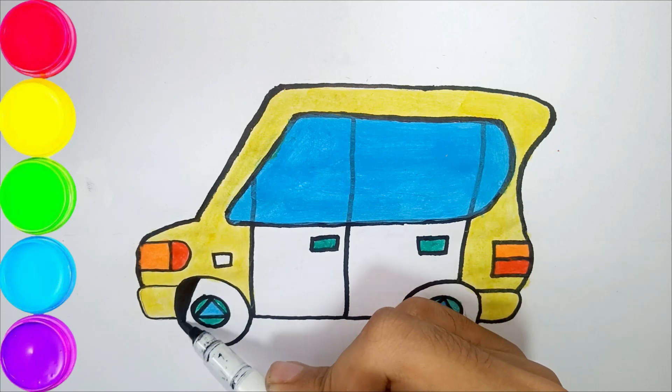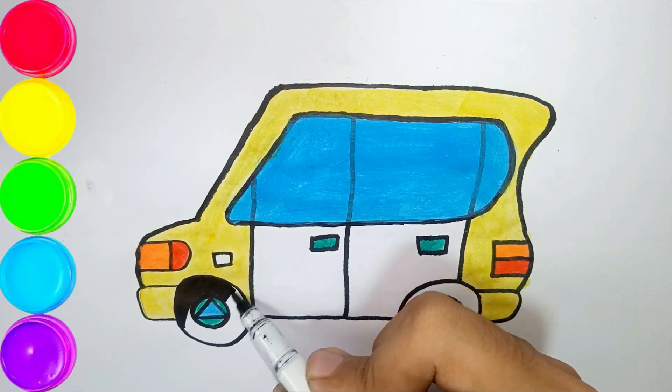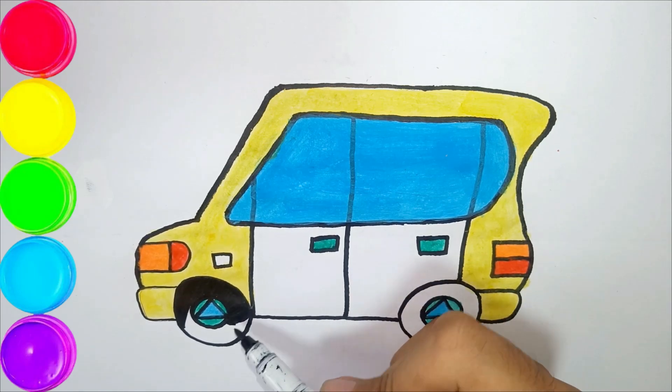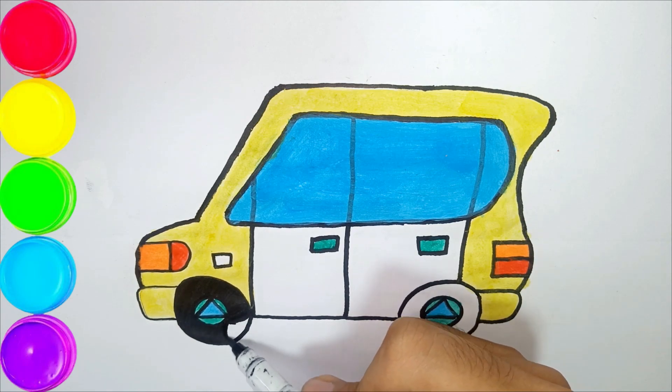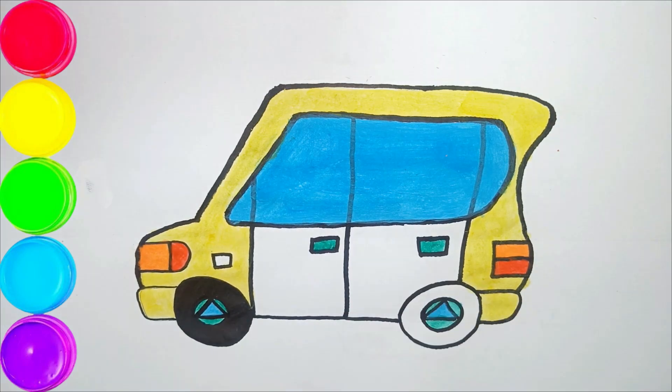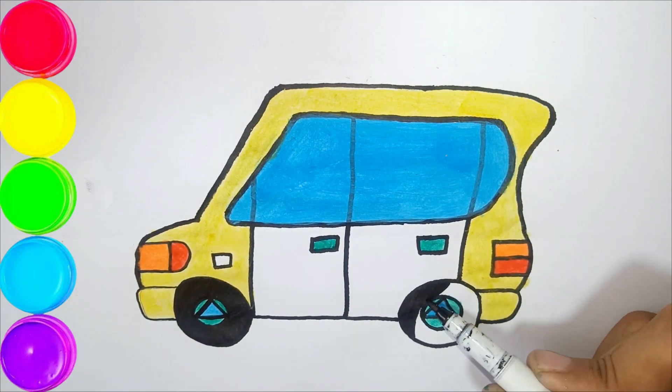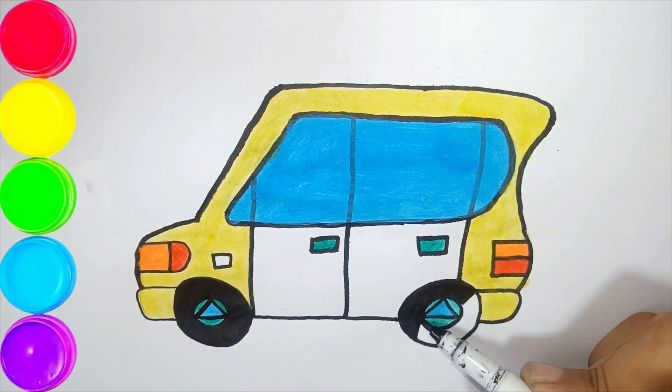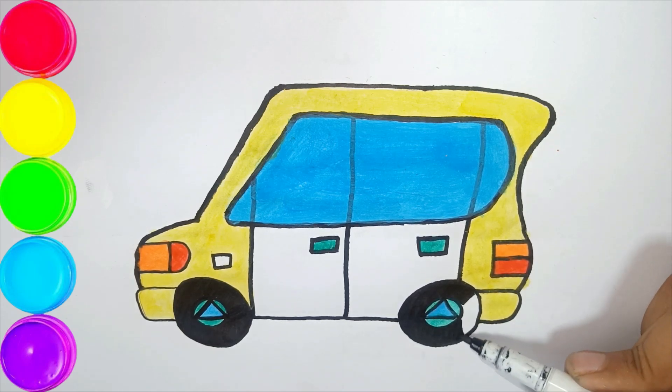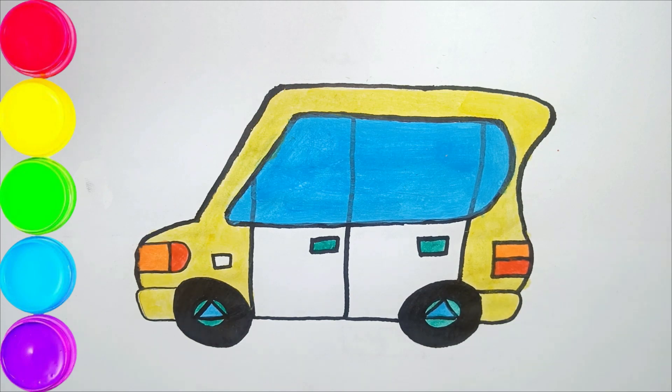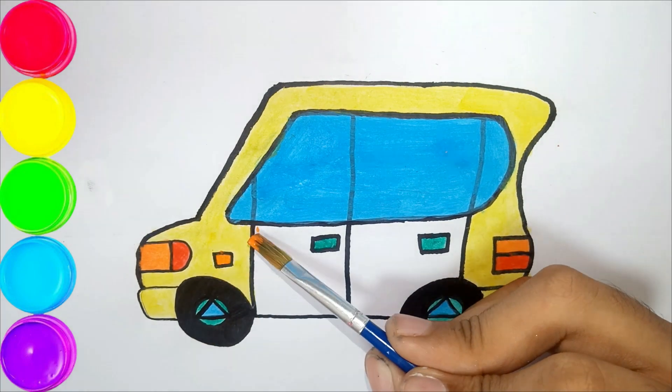And paint the tires with black! Don't forget the signal light on this side, and now we use orange and red for the doors.